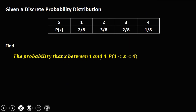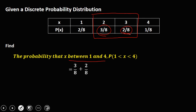For the probability of X between 1 and 4: the values between 1 and 4 are X=2 and X=3. Adding the probabilities: 3 over 8 plus 2 over 8. Adding the numerators, 3 plus 2 is 5 over 8. So this is the probability that X is between 1 and 4.